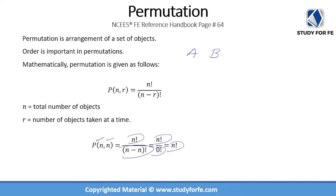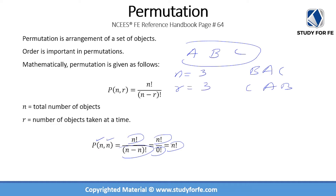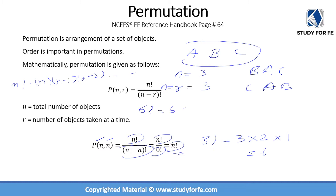Going back to our example of A, B, C: the total number of objects is 3 and we are taking all three at a time, so n equals r. Therefore the number of permutations is simply n factorial, which is 3 factorial: 3 times 2 times 1, equal to 6. As a quick review, n factorial means n multiplied by n minus 1 multiplied by n minus 2 and so on. For example, 6 factorial is 6 times 5 times 4 times 3 times 2 times 1. So taking all three letters A, B, C at a time gives us 6 permutations.